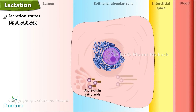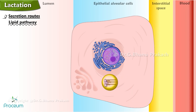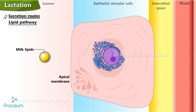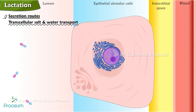In the lipid pathway, epithelial cells synthesize short-chain fatty acids; however, longer-chain fatty acids greater than 16 carbons, which predominate in milk, originate primarily from the diet or from fat stores. The fatty acids form into lipid droplets and move to the apical membrane. As the apical membrane surrounds the droplets and pinches off, it secretes the milk lipids into the lumen in a membrane-bound sac.